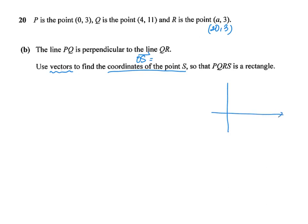P is the point (0,3), so this is probably point P. Q is the point (4,11), probably somewhere here. So this is P to Q. And they tell us that R is the point (20,3), so (20,3) may be somewhere here for point R. And they are perpendicular to each other. So I need to find the point S.